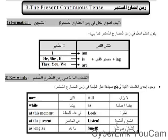The keywords that tell you the tense is present continuous: when you see 'now', 'while', 'at this moment', 'at the present', 'as long as', 'still', 'as', 'look', 'listen', 'smell'. These words guide you to recognize that the tense is present continuous.